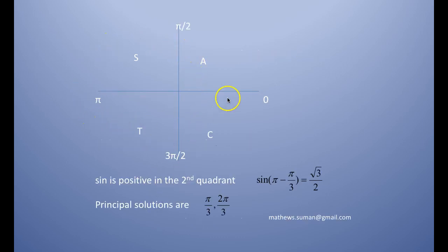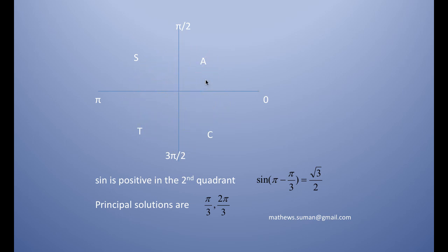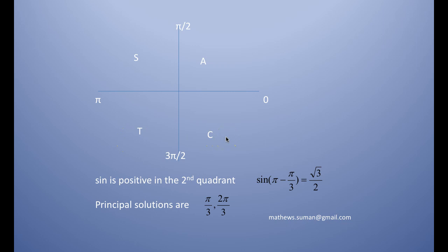Looking at the four quadrants: 0, π/2, π, 3π/2, and 2π, we go in the anti-clockwise direction when we measure. In the first quadrant sin, cos, and tan are all positive (A). In the second quadrant only sin is positive (S). In the third quadrant only tan is positive (T), and in the fourth quadrant only cos is positive (C). Since sin is positive in the second quadrant, sin(π − π/3) = sin(π/3) = √3/2, so π − π/3 = 2π/3 is another principal solution.